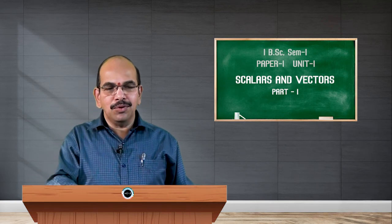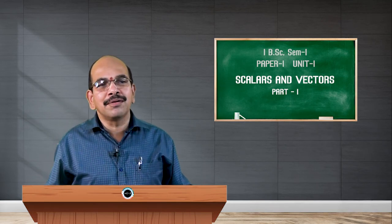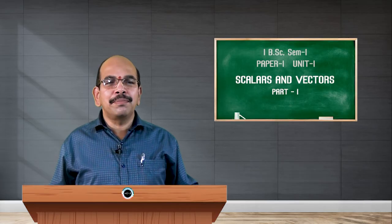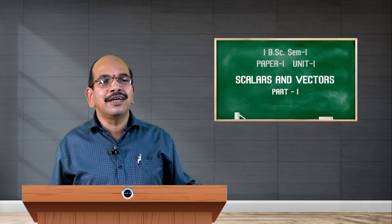If you look at another example, say length — length of an object is a scalar quantity. Temperature is a scalar quantity. Volume of a room is a scalar quantity. Density is a scalar quantity because it does not depend on any direction.